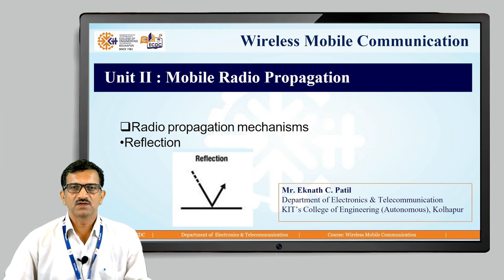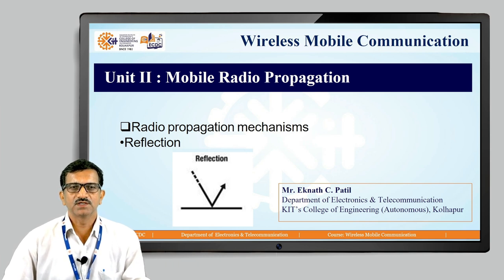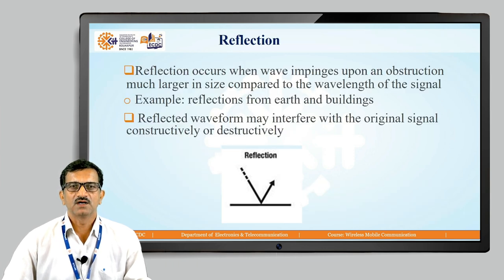Reflection occurs when the size of the object is greater than the size of the wave — in that case, the signal is incident on the surface and reflected back. Reflection occurs when the wave is incident upon an obstruction much larger in size compared to the wavelength of the signal. Examples include reflection from the earth and buildings.